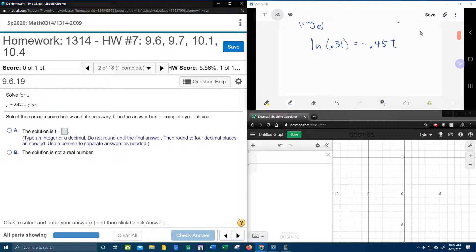And then we're to the last step. If I want to solve for t, I simply need to divide both sides by negative 0.45.